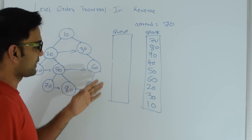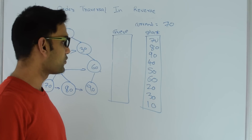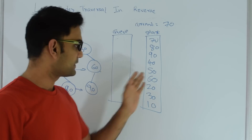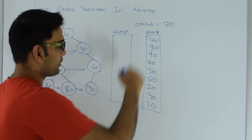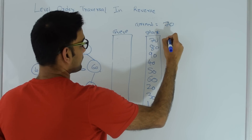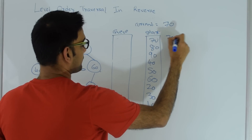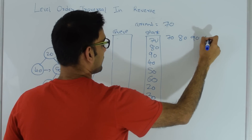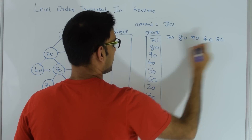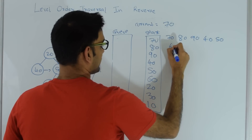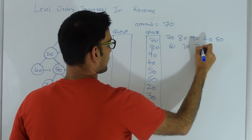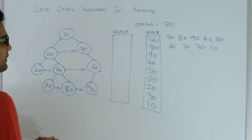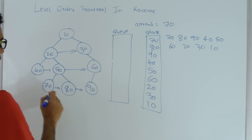When the queue is empty we exit the while loop and then we print the elements of the stack one by one, popping from the top. So 70 is printed first, then 80, 90, 40, 50, 60, 20, 30, and 10. This is our level order traversal in reverse direction.